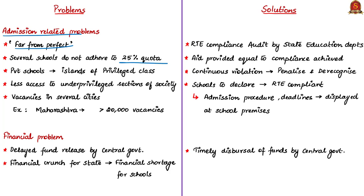This problem occurs almost every year and mandated access to education for underprivileged children is curtailed because of this. Large numbers of vacancies exist in several cities in the country. For instance, in Maharashtra on the last day of admissions under the RTE Act there were more than 20,000 vacancies.